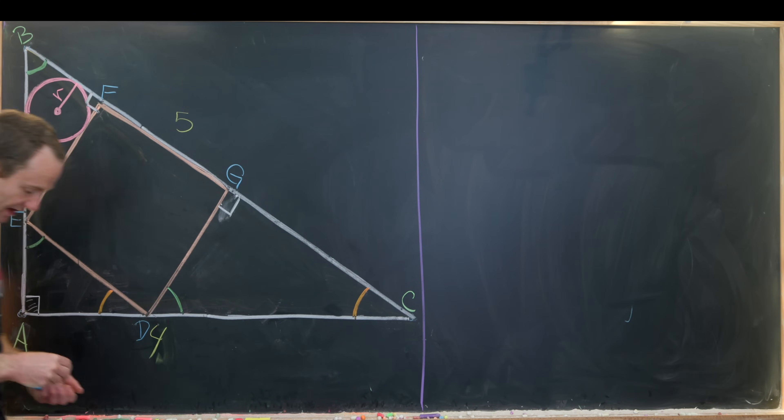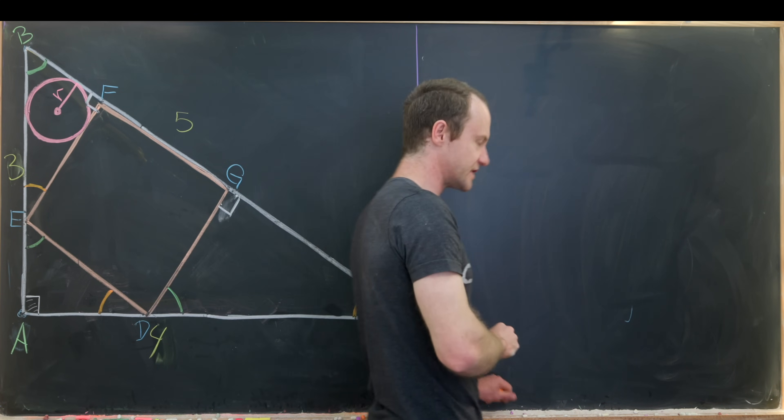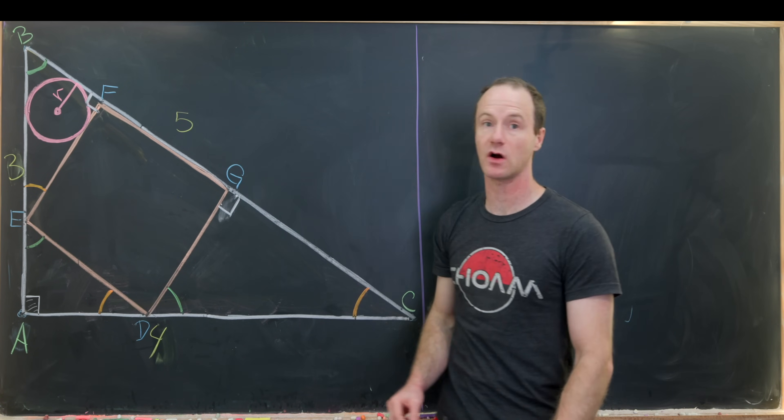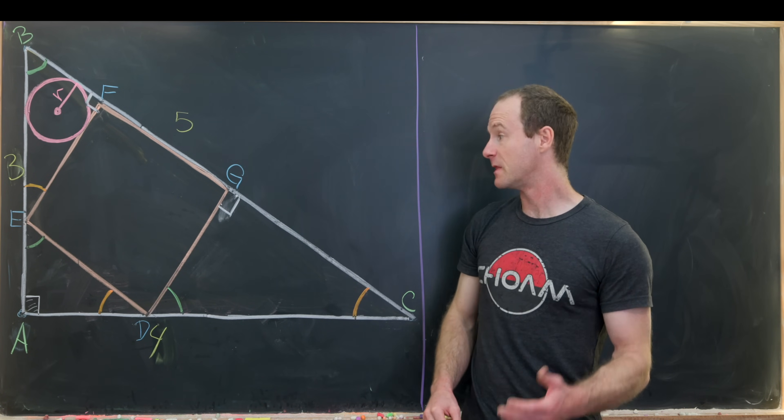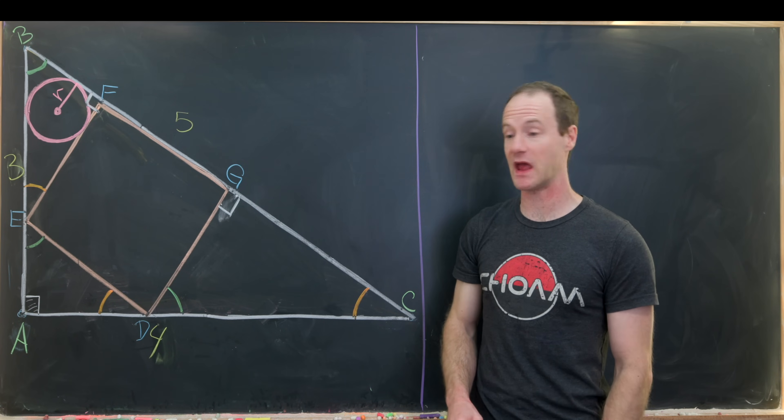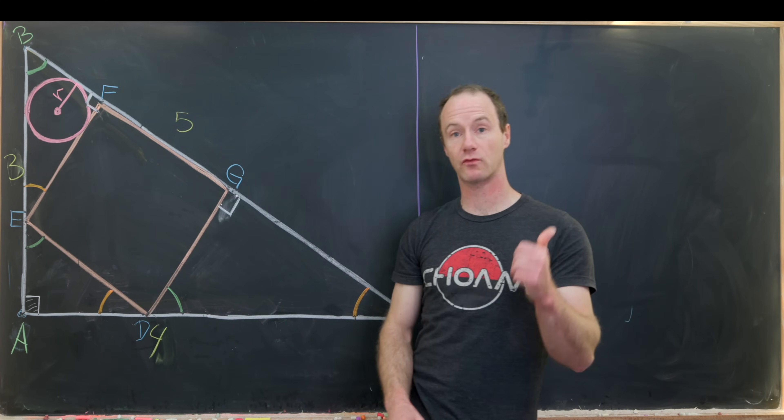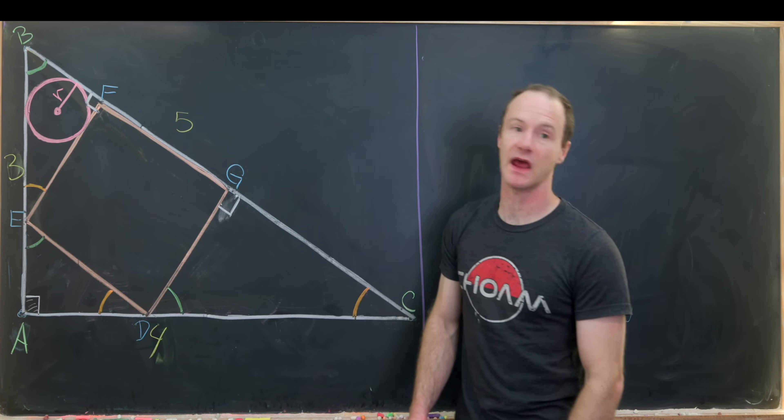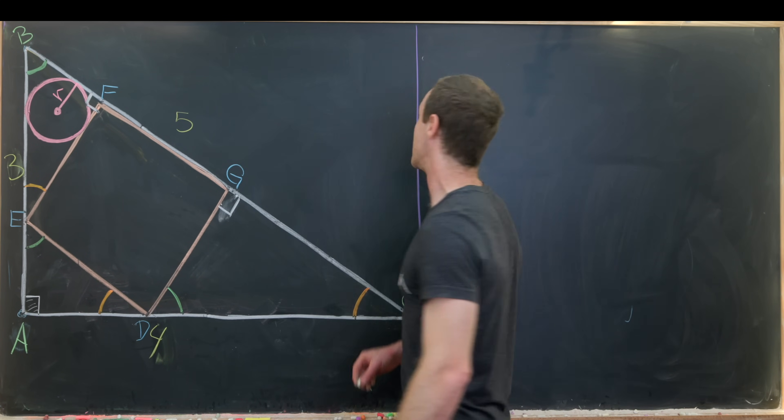But notice by the angle-angle-angle theorem, all of our triangles are similar to each other. That's because they all have the same angle measures. They all have a right angle, an orange angle and a green angle. So that gives us quite a bit of information.